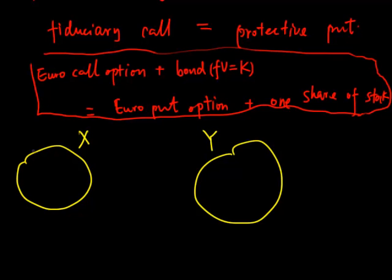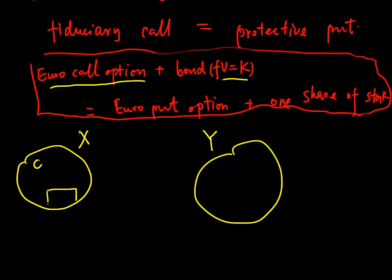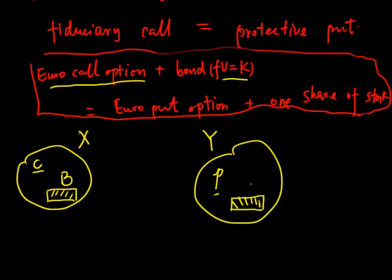In Portfolio X, we have a European call option — we use a small 'c' for European call — and in addition we have a bond with a face value of K. In Portfolio Y, we have a European put option — small 'p' — and we have one share of stock.